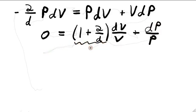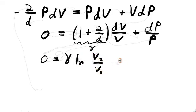This quantity 1 plus 2 over D has a name. It's called the adiabatic index and is often denoted by gamma. Now we're going to integrate this equation from some initial state 1 to some final state 2 to find that 0 equals gamma times the natural log of V2 over V1 plus the natural log of P2 over P1.